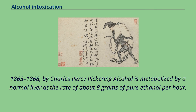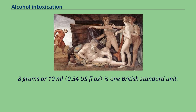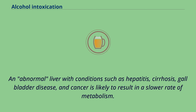Alcohol is metabolized by a normal liver at the rate of about 8 grams of pure ethanol per hour. 8 grams or 10 ml is one British standard unit. An abnormal liver with conditions such as hepatitis, cirrhosis, gallbladder disease, and cancer is likely to result in a slower rate of metabolism.